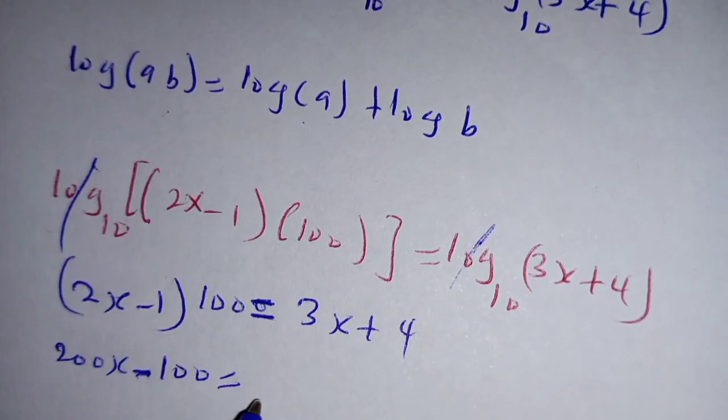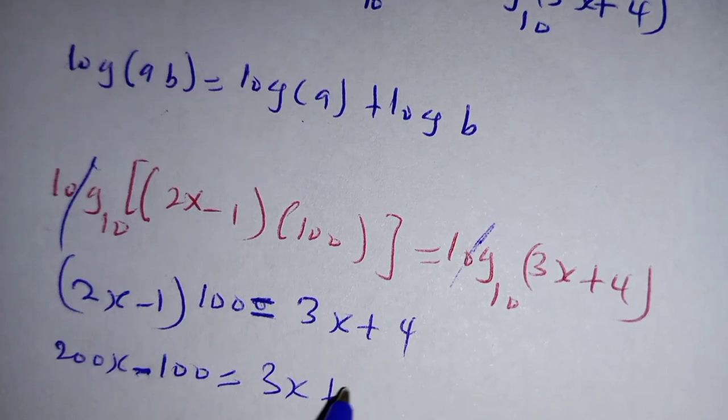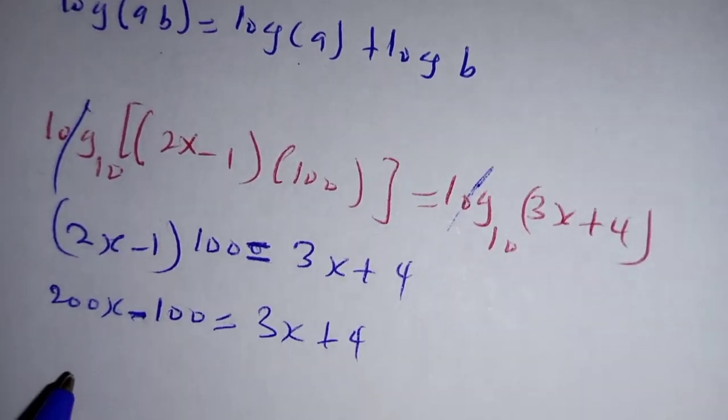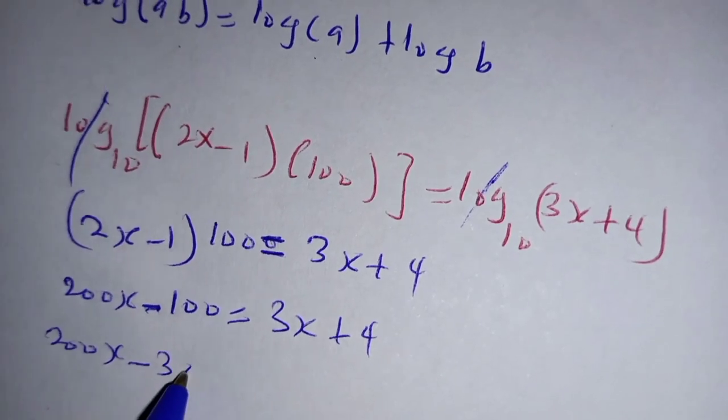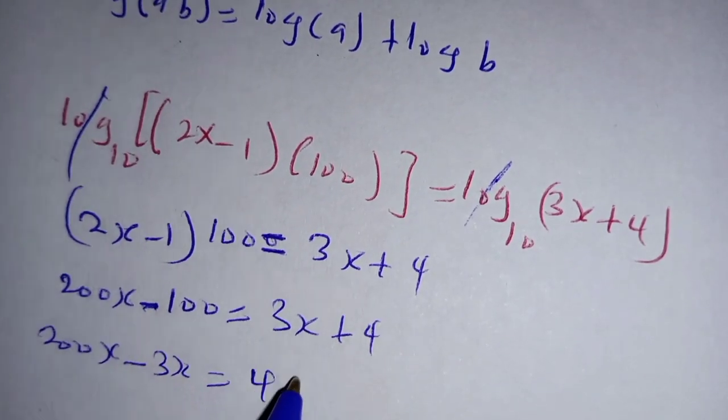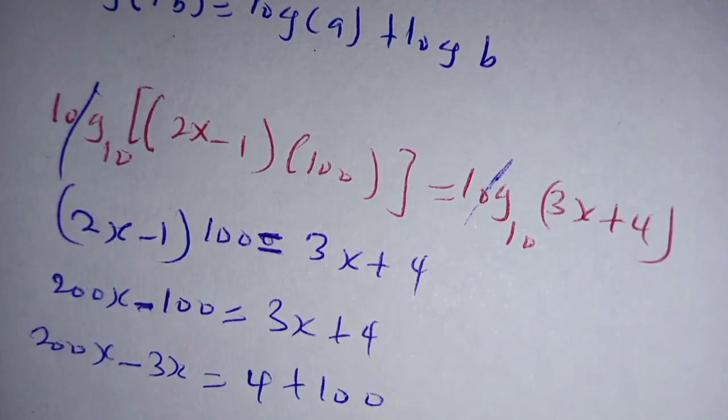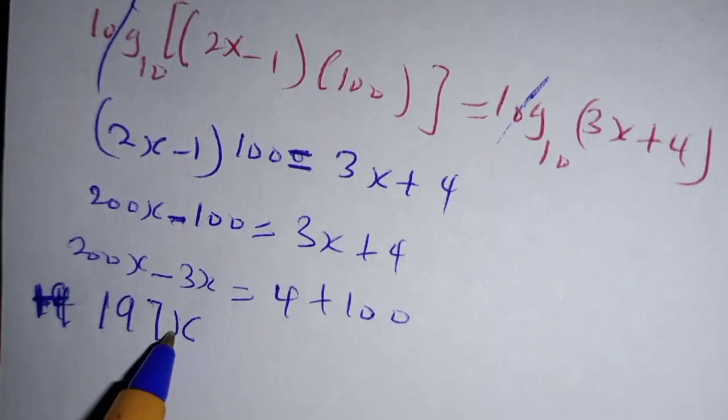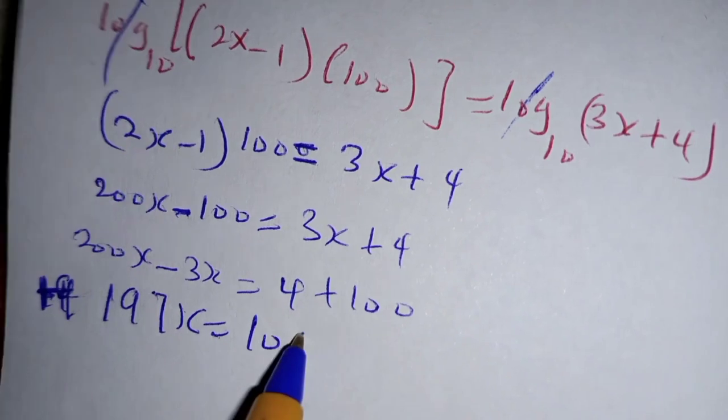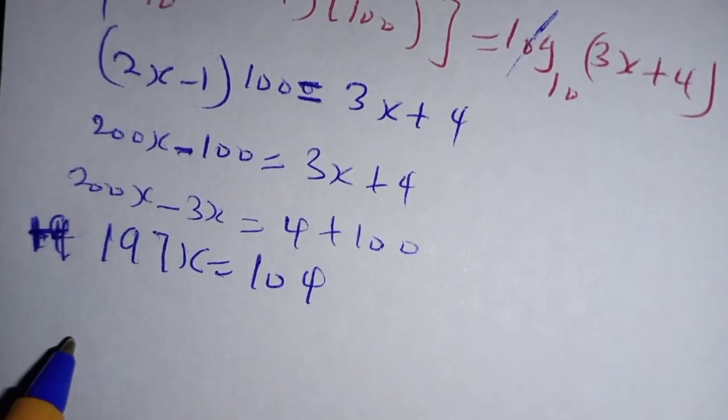You collect the x terms together, so you will have 200x minus 3x, which is equal to 4 plus 100. 197x is equal to 104.